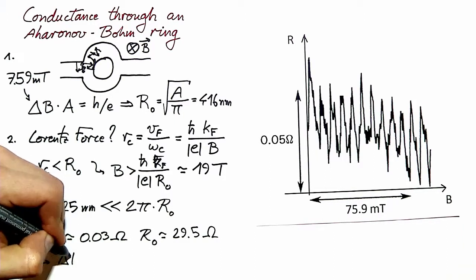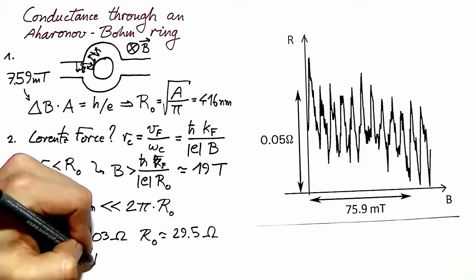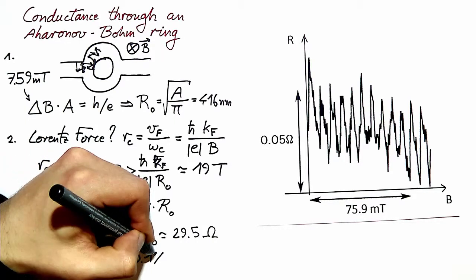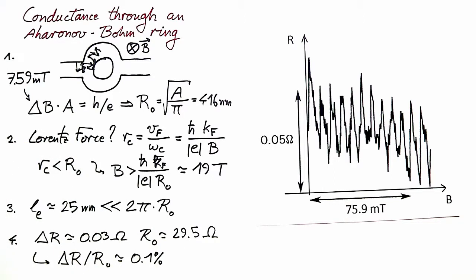So the relative amplitude is about 0.1 percent. Before commenting on this number, let's discuss two possible mechanisms which lead to a reduction of the amplitude of Aharonov-Bohm oscillations.